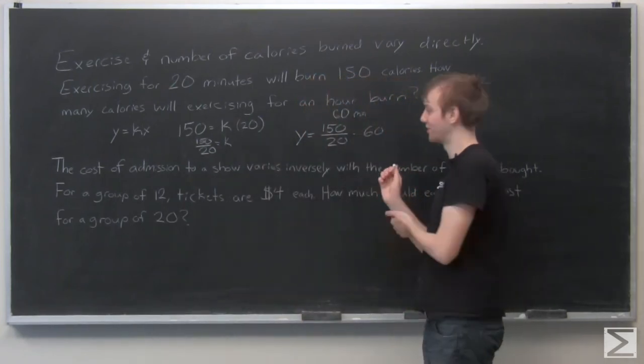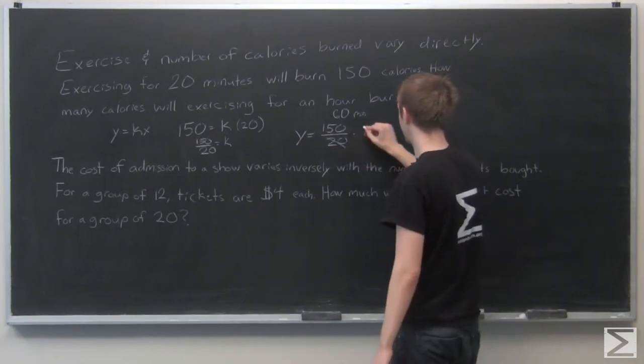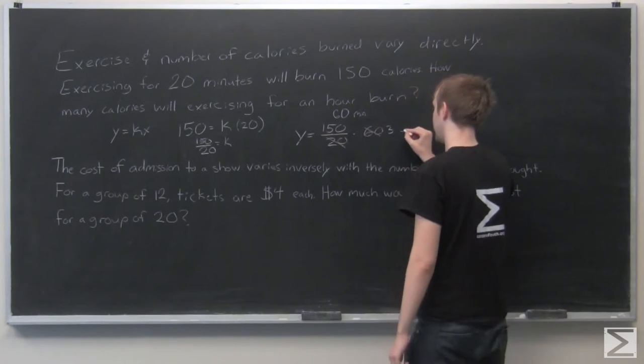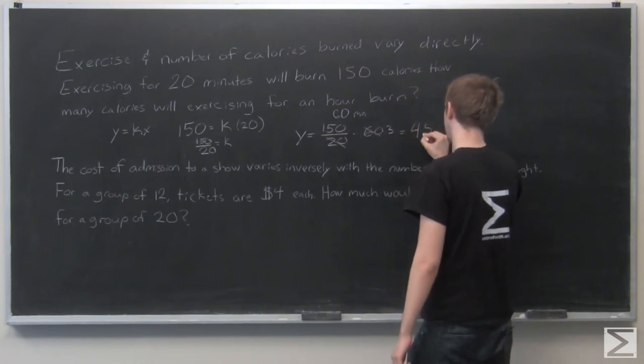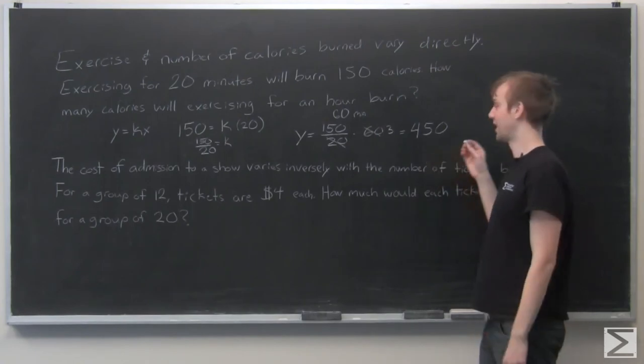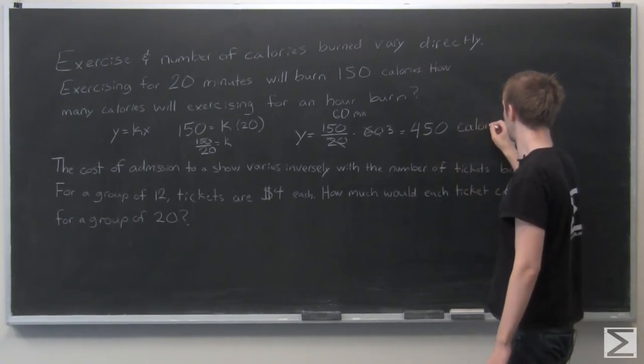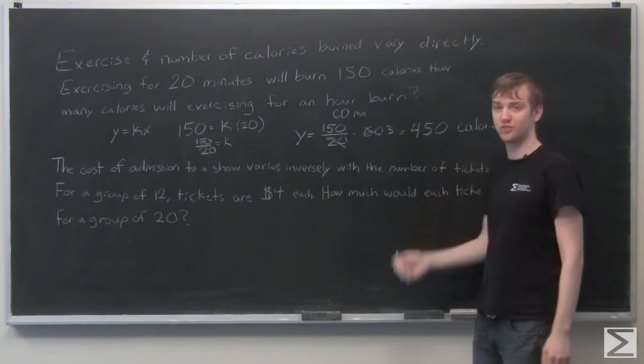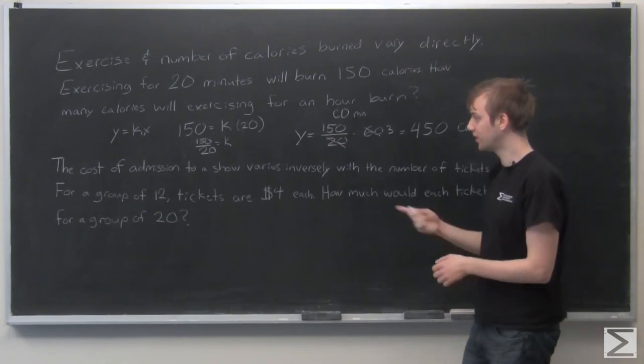And the reason I left this unsimplified, we can just cancel out 20, and that gives us a remainder of 3. And 150 times 3 is 450. So our answer, 450 calories, include my units. So in an hour, we'll burn 450 calories.